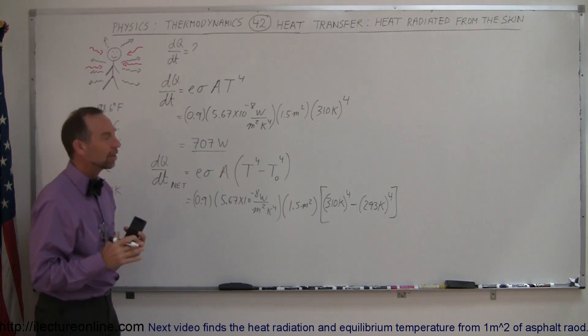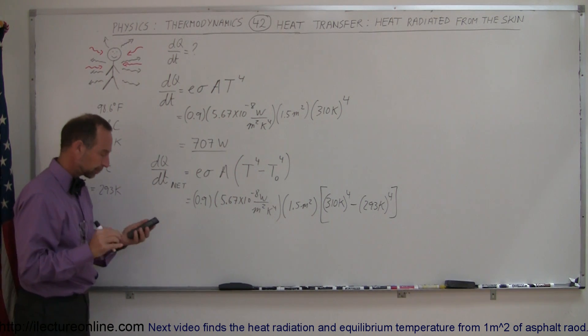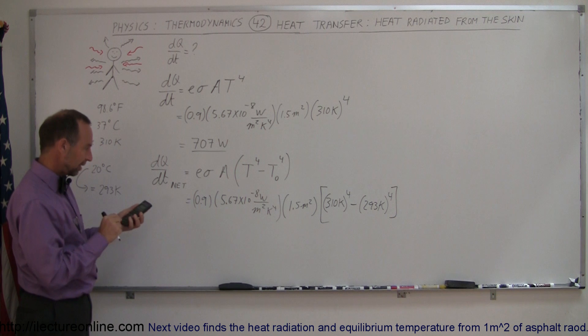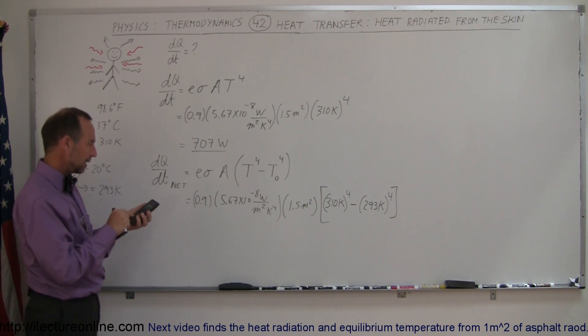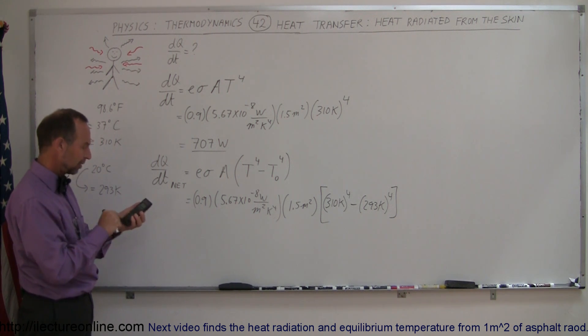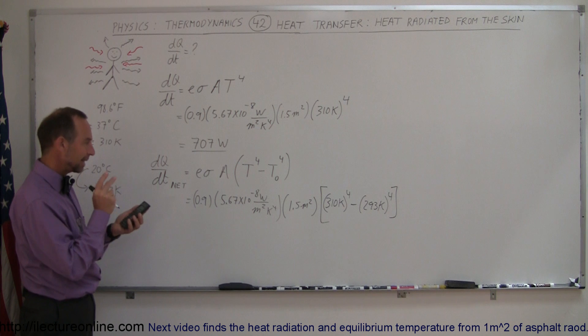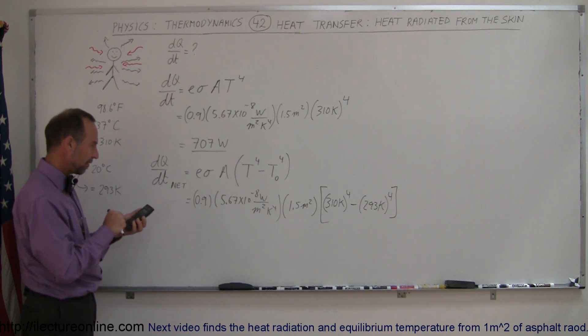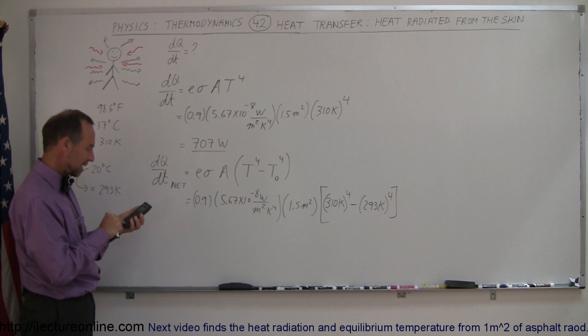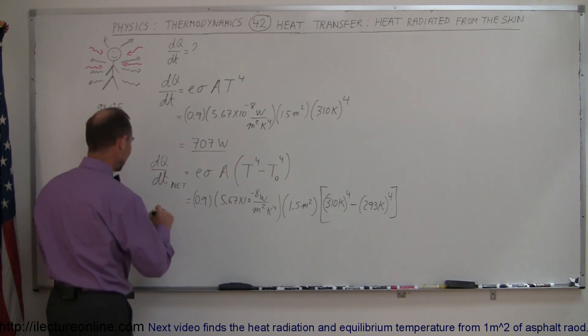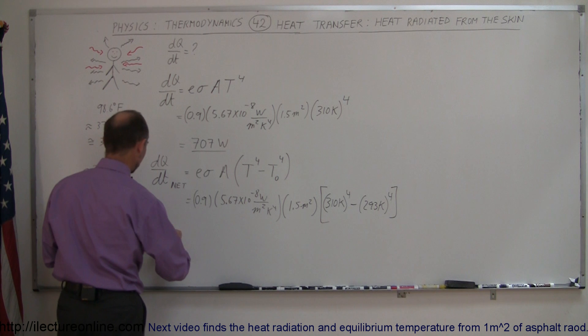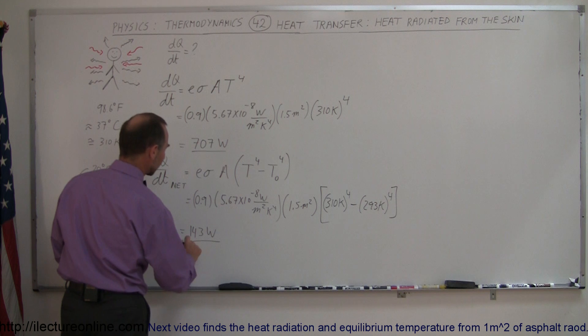So let's see here, that would be 0.9. Actually, I'm going to work that out first by itself. So 310 to the 4th power minus 293 to the 4th power, and we take that and multiply that times 1.5 times 5.67E-8 times 0.9 equals. And then you find that the net heat loss is much smaller. It's only about 143 watts.